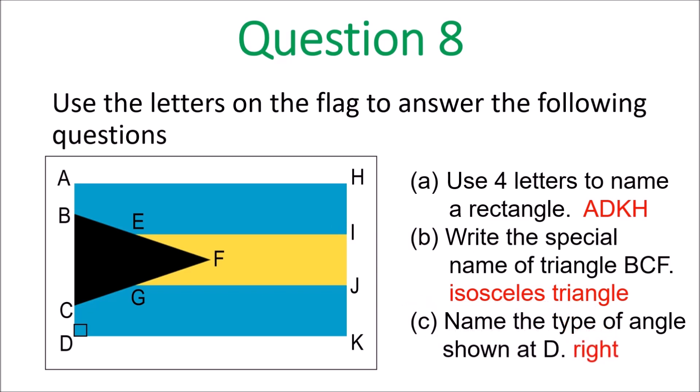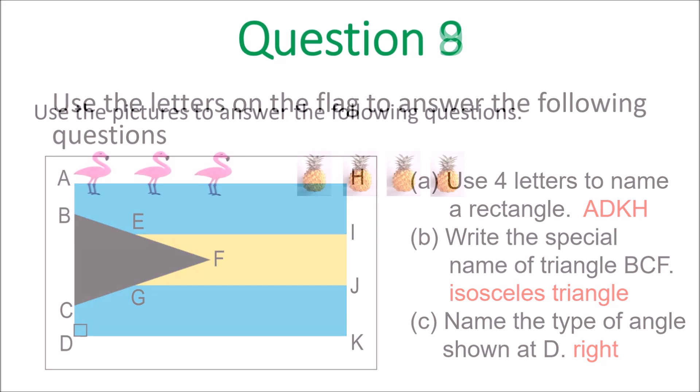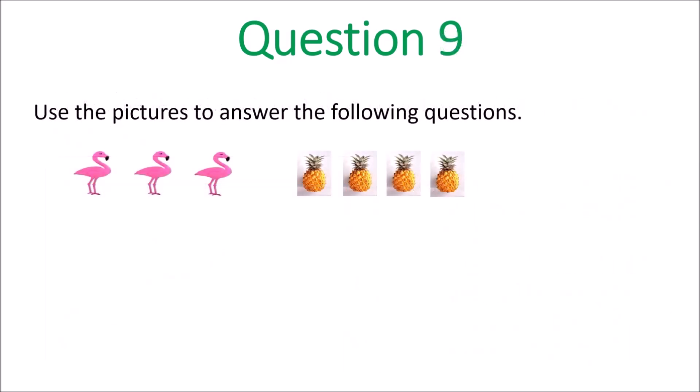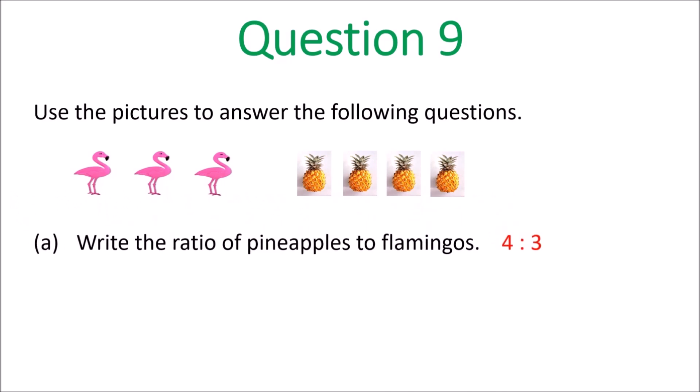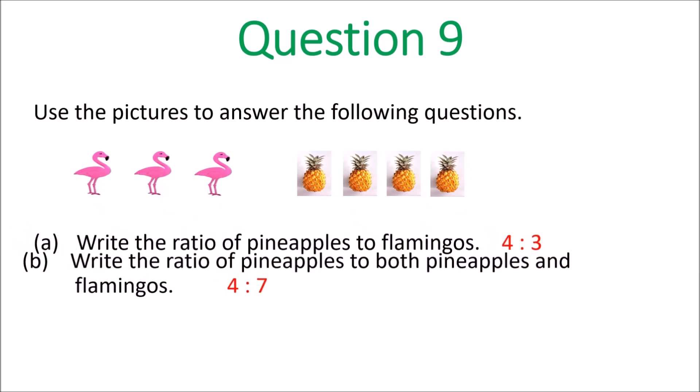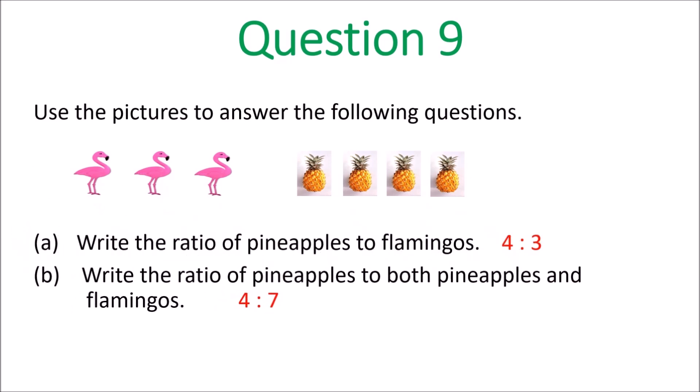Question 9: use the pictures to answer the following questions about ratios. The first one — the ratio of pineapples to flamingos: you use the pineapple number first, four, then two dots, then three — so that's 4:3. B: write the ratio of pineapples to both pineapples and flamingos — four pineapples, and pineapples and flamingos together is seven, so it's 4:7.